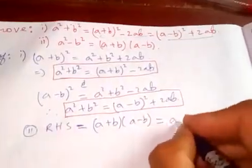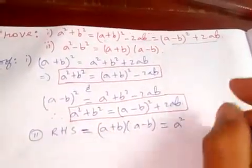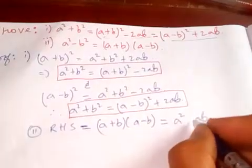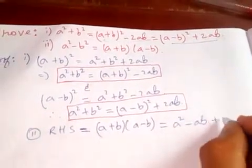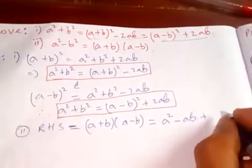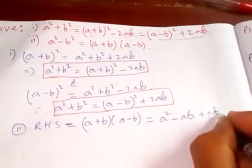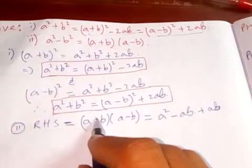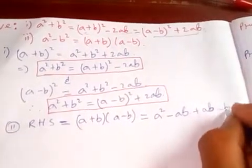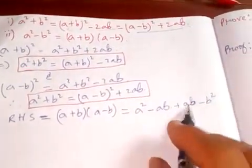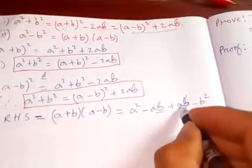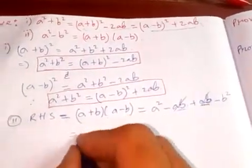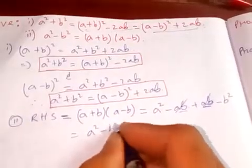A into b is ab which is minus, and plus b into a. Since multiplication is commutative, ba can also be written as ab. And minus b into b means b². Since these two have the same term with opposite sign, they cancel each other. So lastly we get a² - b².